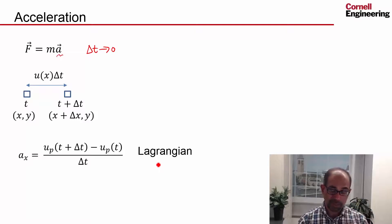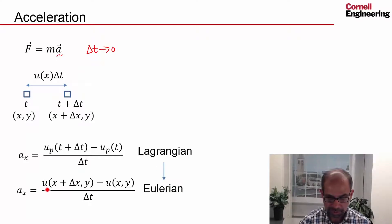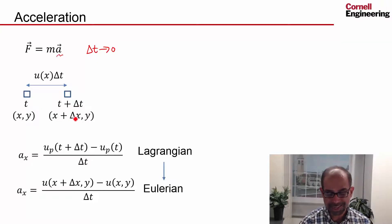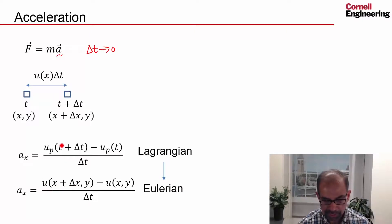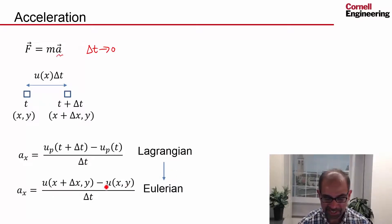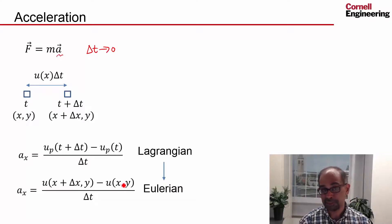This is a Lagrangian view because we are following the particle. We have to switch to the Eulerian view. In the Eulerian view, at time t plus delta t, the particle is at x plus delta x, y. So we look at the velocity field and take the velocity at that location. The velocity field gives us u at x plus delta x, y, and similarly at time t its velocity is given by the value at x, y, then divided by delta t.